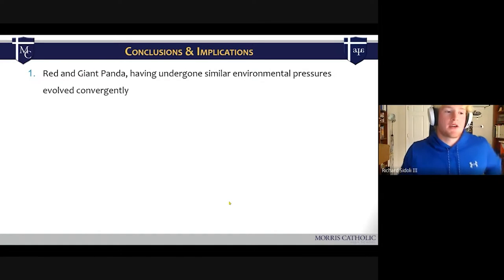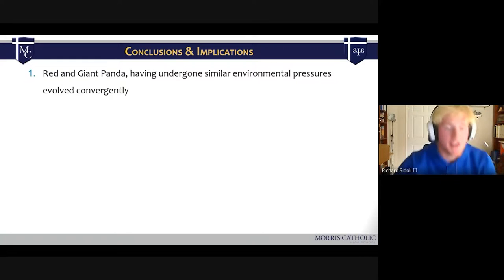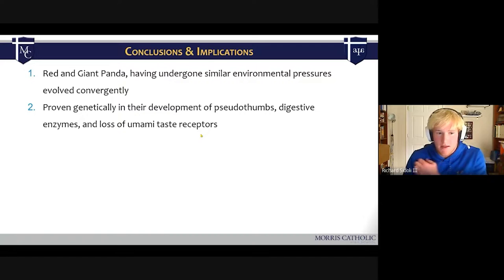So conclusions and implications. Due to their similar environmental pressures, they evolved convergently, meaning their evolution while taking a different route. They're not coming from the same species, they're coming from a different, they split like a fairly long time ago from a common ancestor, but then through evolution, they eventually came back to exhibit a lot of the same traits. Specifically, that's their pseudothumbs, digestive enzymes, and the loss of umami taste receptors.